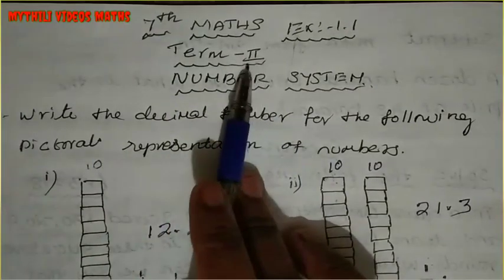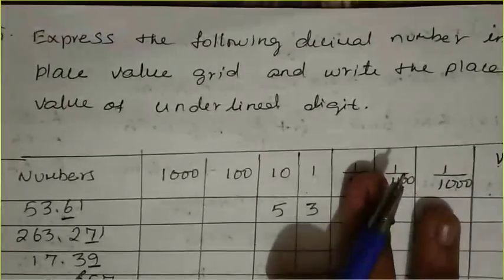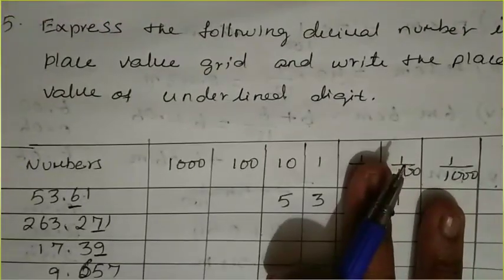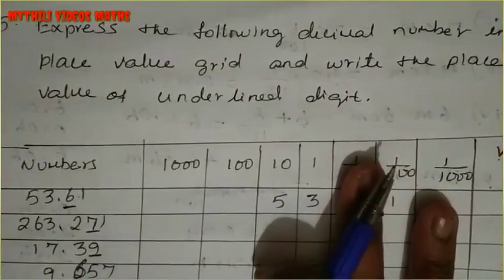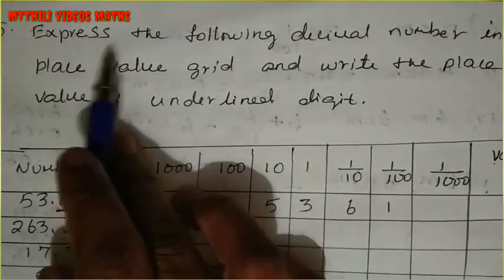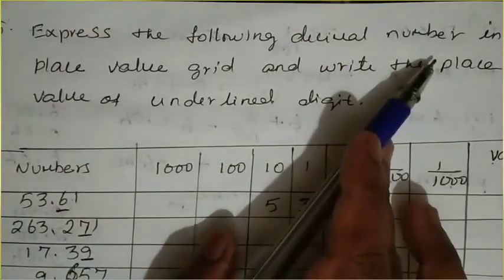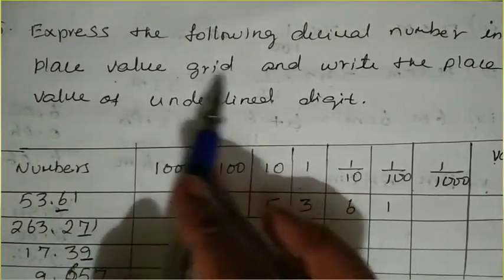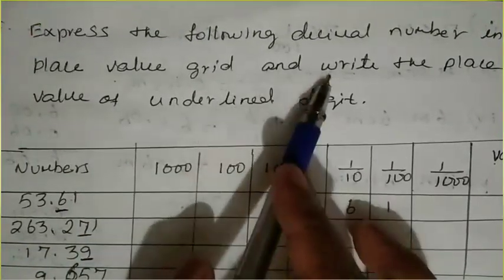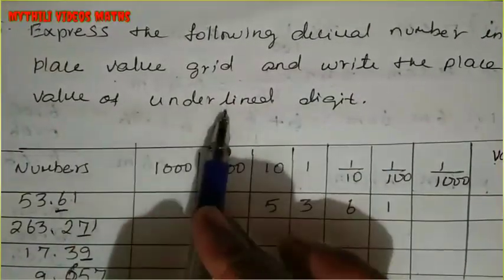So, if you have already done 4 sums, now we will see the 5th sum. The question asks you to express the following decimal number in a place value grid and write the place value of the underlined digit.